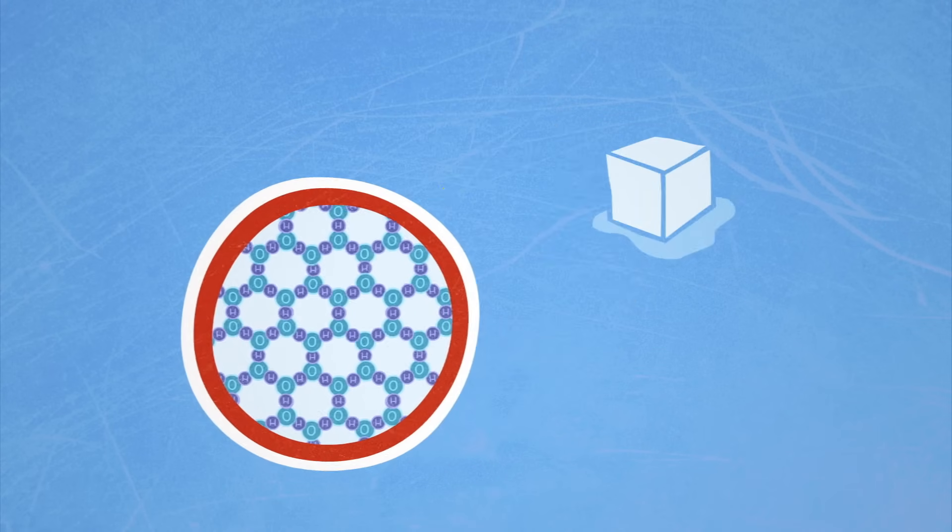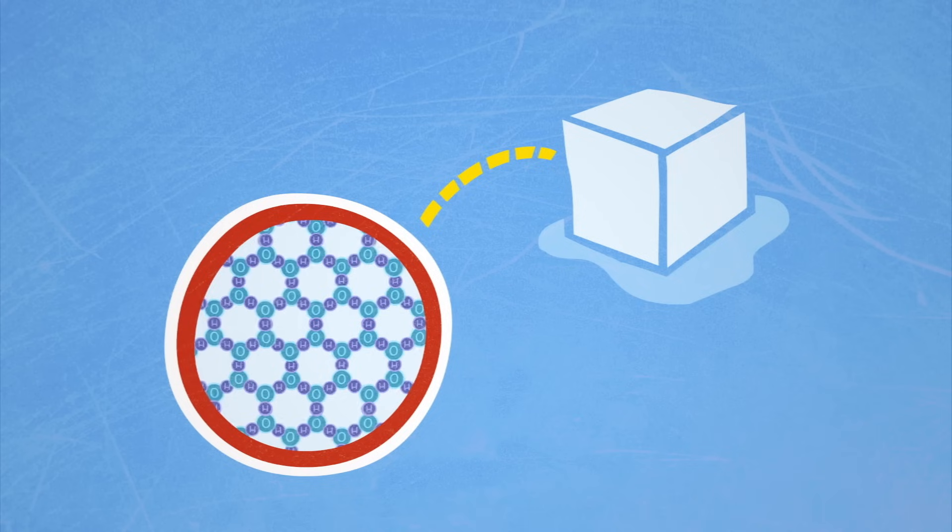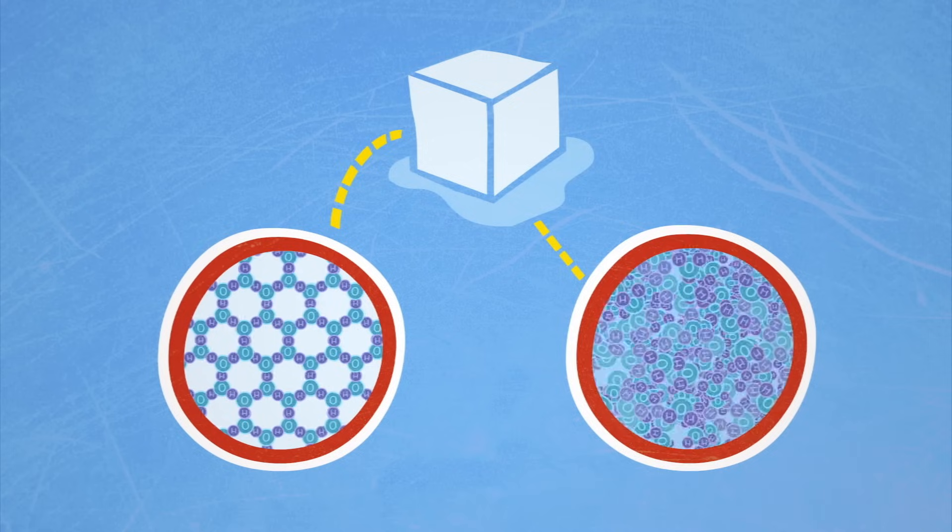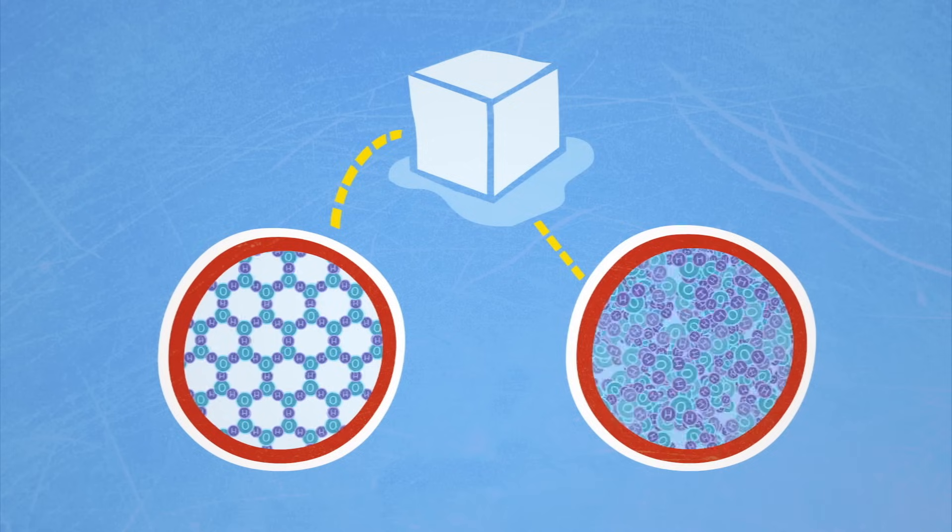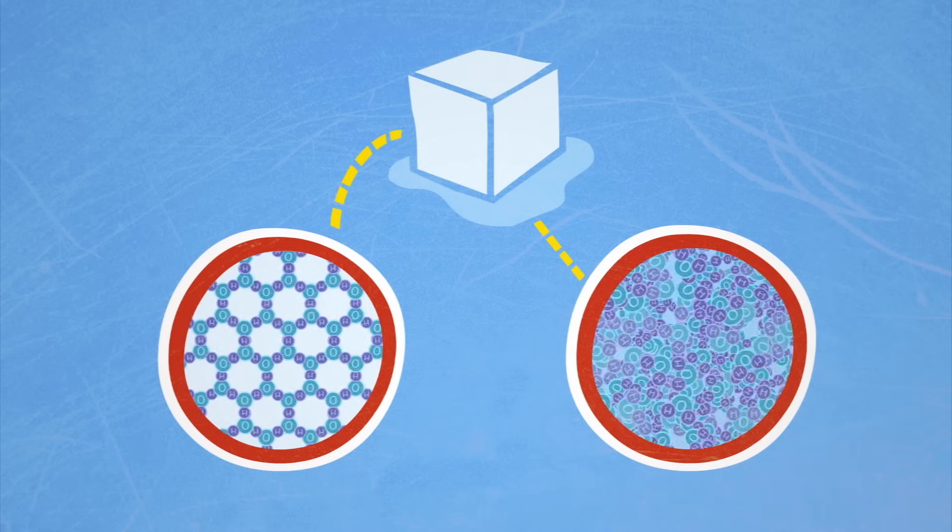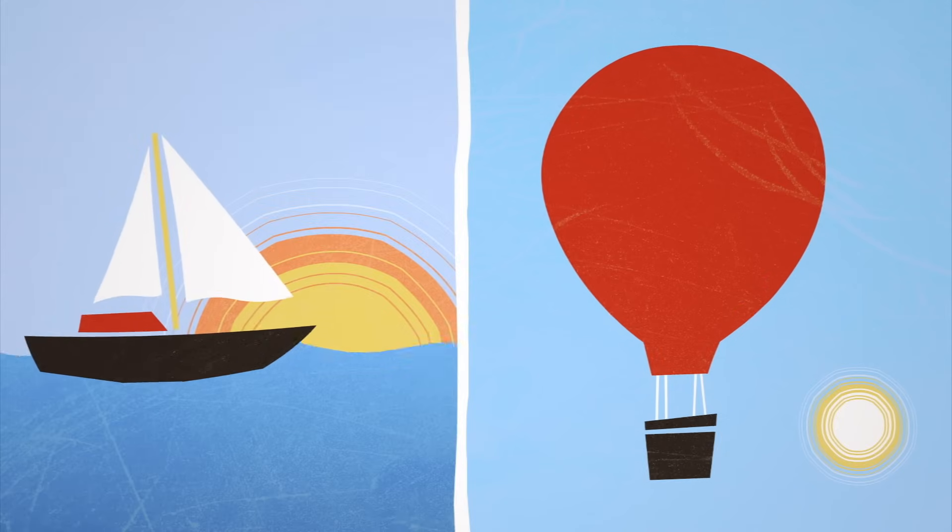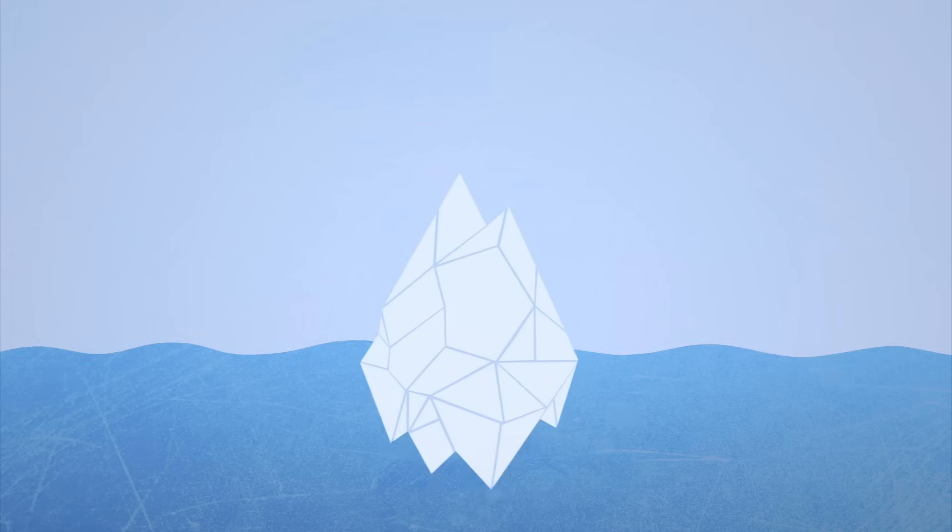This is what solid water, ice, looks like on the molecular level. Notice that the ordered hexagonal structure is less dense than the disordered structure of liquid water. And you know that if an object is less dense than the fluid it's in, it will float. So ice floats on water.